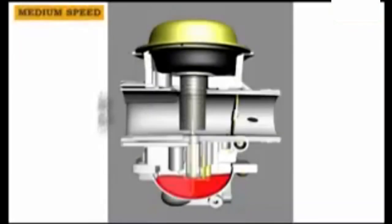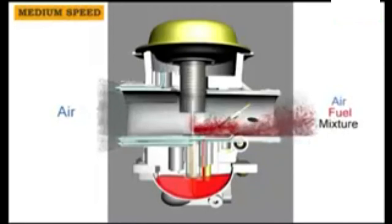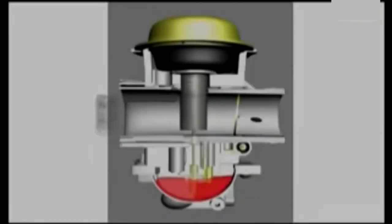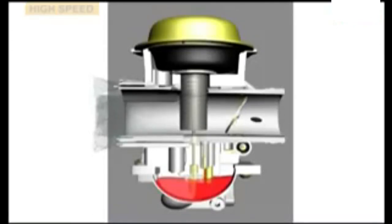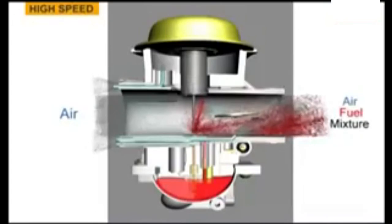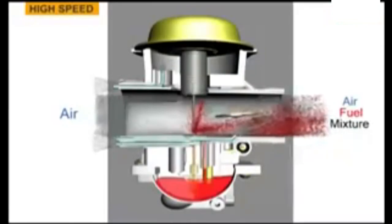At medium speed — about half to three-quarter throttle — the same adjustments are in play, but now the slide is higher in the bore, so is the needle, opening the main jet more and more, giving the main jet size a larger effect on the mixture. The pilot jet is flowing at full fuel but contributing less and less as the throttle opens. At full throttle, the slide is all the way up in the bore and the main jet is fully open — the jet needle no longer controls fuel flow through the main jet, so the main jet is flowing at maximum capacity. The only real adjustment at full throttle is the main jet size.